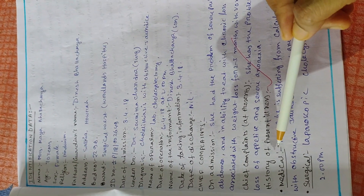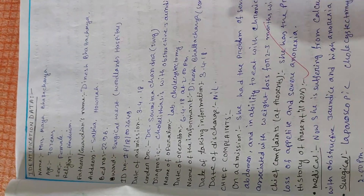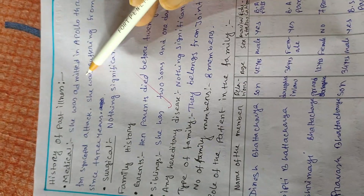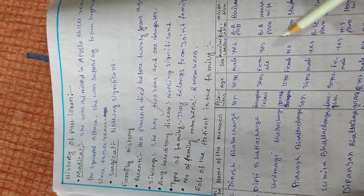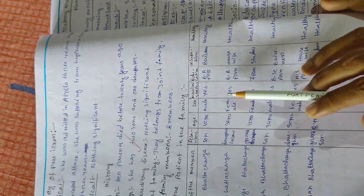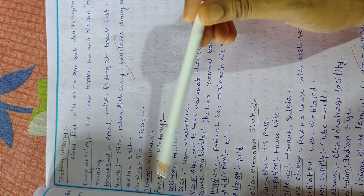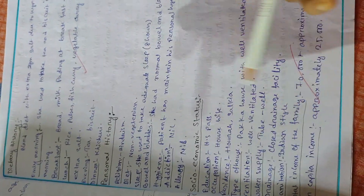After the chief complaint, write the history of present illness, medical and surgical history. Next is family history — including family member names, their relationship, and age. Then dietary history covering morning diet, lunch, evening, and dinner, followed by personal history including addiction, religion, diet, sleep history, and socio-economic status.